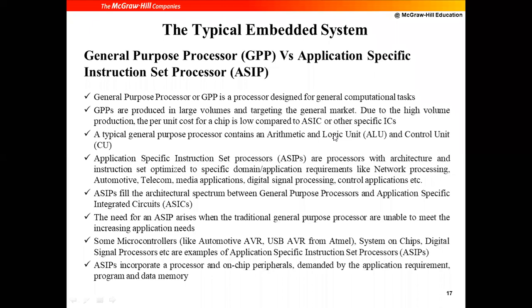In a general purpose processor, other things like interfacing units, interrupts, or memory must be interfaced externally. Coming to specific instruction set processors — these processors have an architecture and instruction set optimized for specific domain applications, specific domain or application requirements. For example, network processing, automotive, telecom, or media applications. An embedded system meant for a particular application — like a network card — cannot be used for any other application.